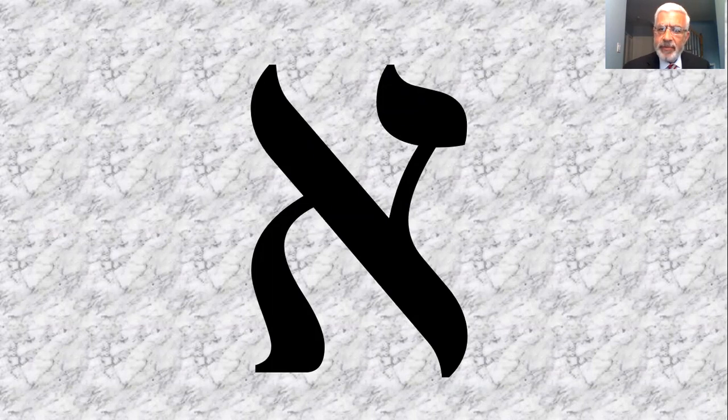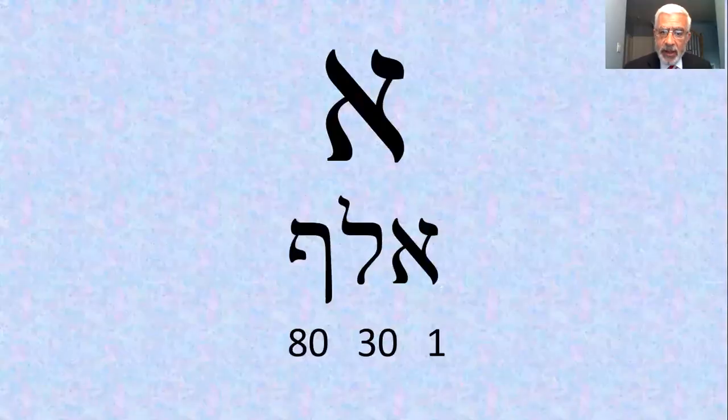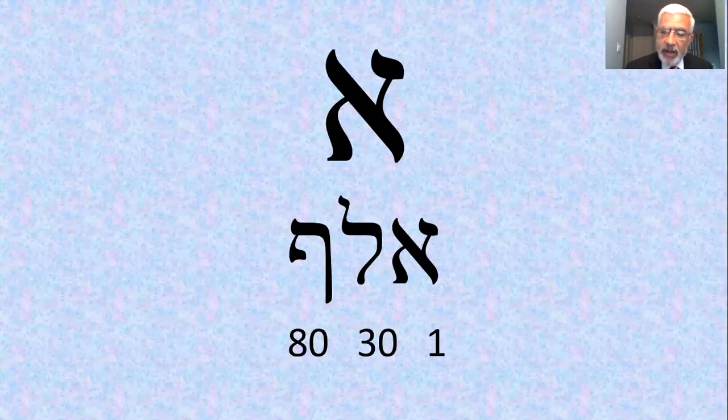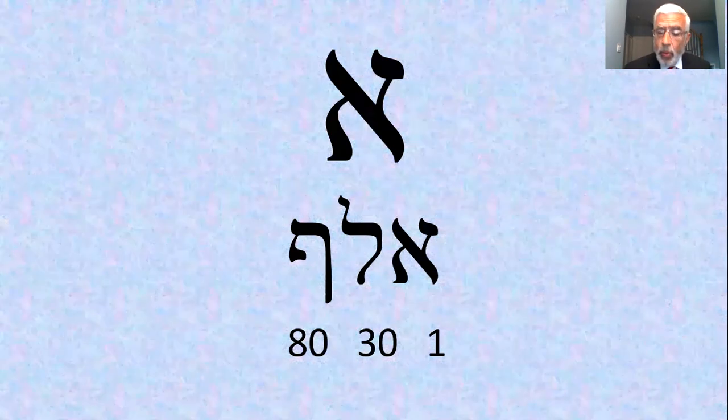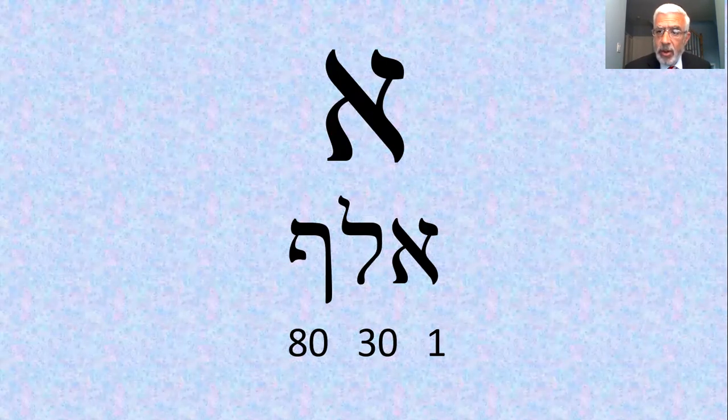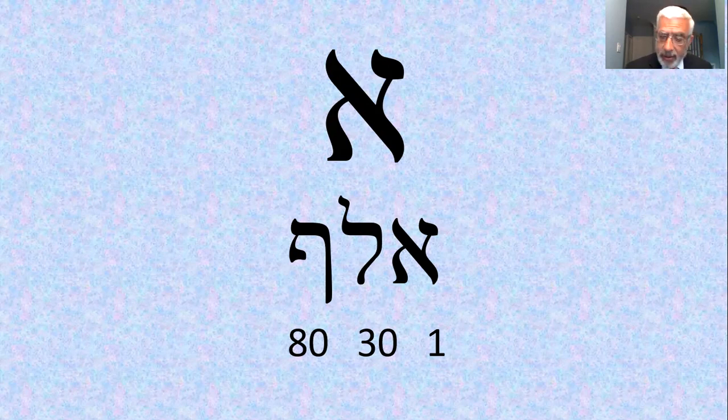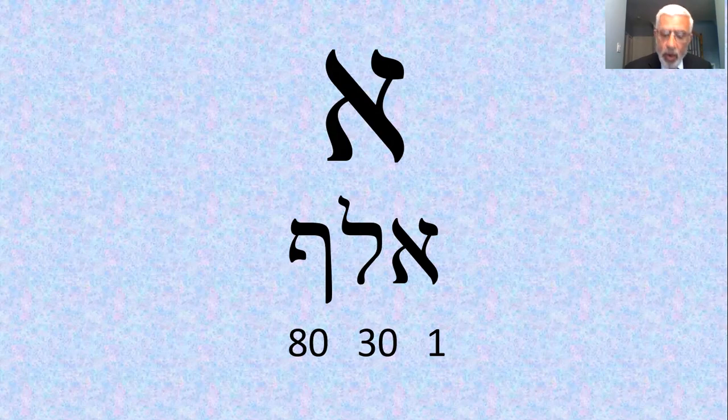Even more than that, how do you spell the letter Aleph? In Hebrew, you spell it Aleph, Lamed, and Peh. That's how you spell out the word Aleph. Again, Aleph is one. The numerical value of the letter Lamed is 30, and the numerical value of the letter Peh is 80. 80 plus 30 plus 1 equals 111. One, one, one. God was one, He is one, and He always will be one.